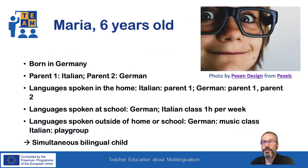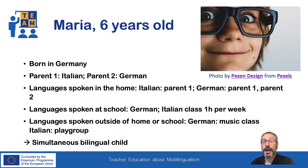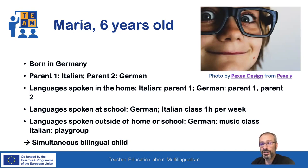Maria is six years old. She was born in Germany to an Italian and a German parent. At home she speaks Italian with one parent and German with the other. The school language is German, but she also has Italian classes one hour each week. Outside of home or school, she uses German in her music class but is also part of an Italian play group. Maria is a simultaneous bilingual child.